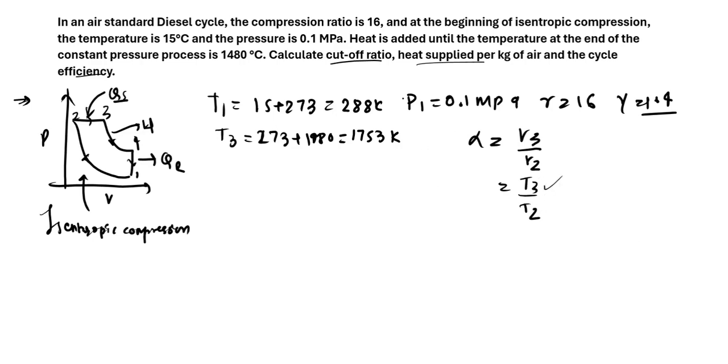We need to calculate T2. We have T3, we need to calculate T2, which we will calculate using the isentropic compression formula, which is PV to the power gamma is constant. You can apply the ideal gas equation here, which is RT by V to the power gamma should be constant. So T times V to the power gamma minus 1 should be constant because R is already a constant. So we have T1 V1 to the power gamma minus 1 equals T2 V2 to the power gamma minus 1. And we have the value of T2 as T1, which will be 288 times V1 by V2 to the power gamma minus 1.